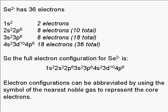The selenide ion has 36 electrons. The first two go into the 1s subshell. Two electrons go into 2s and six into 2p, for eight in the second shell, giving ten total. Two electrons go into 3s and six into 3p, adding eight to reach 18 total. The next two go into 4s, ten into 3d, and eight into 4p — adding 18 more to reach 36 electrons total.